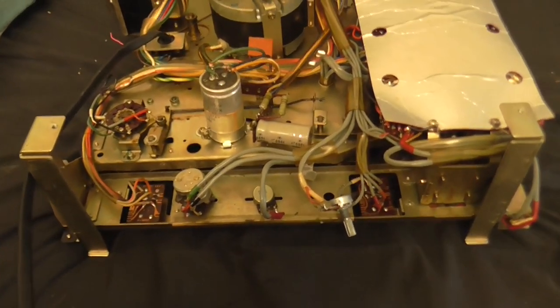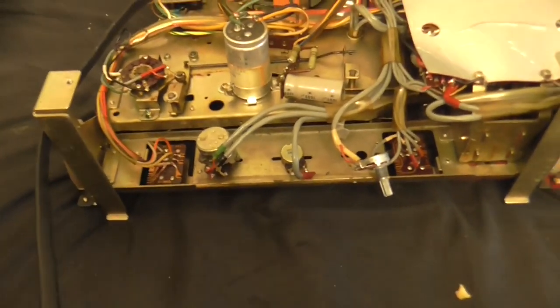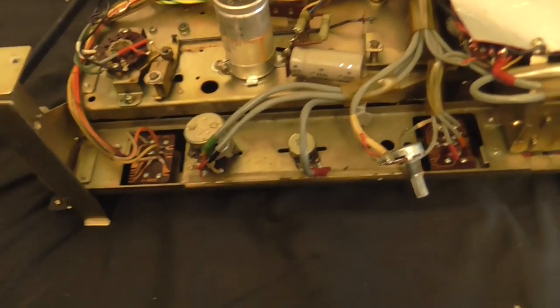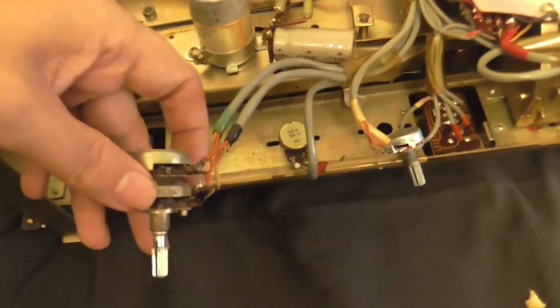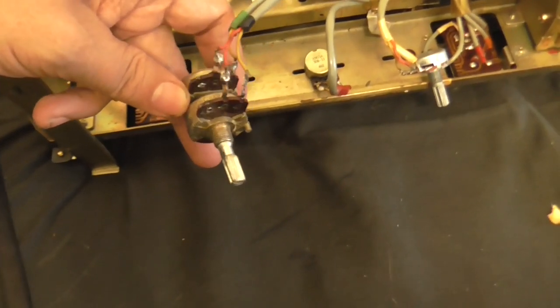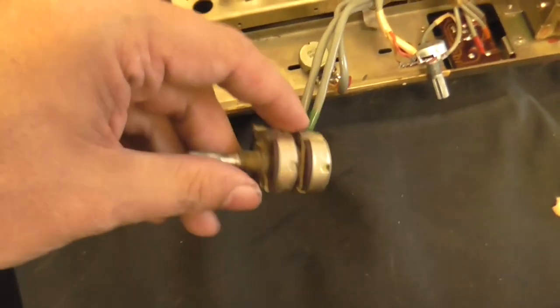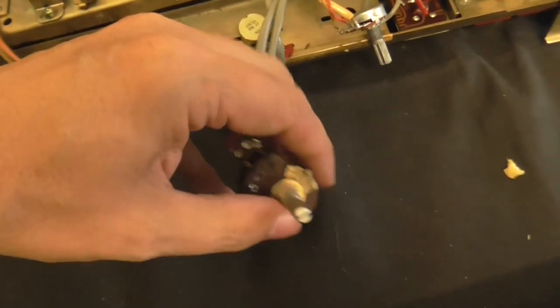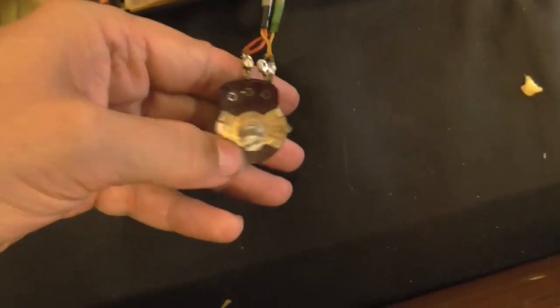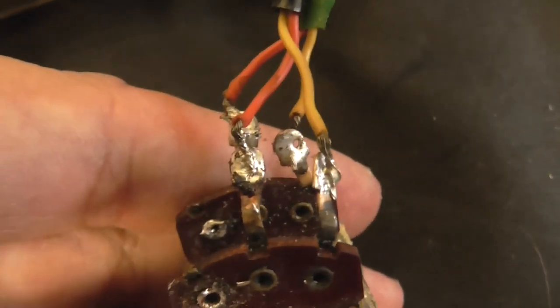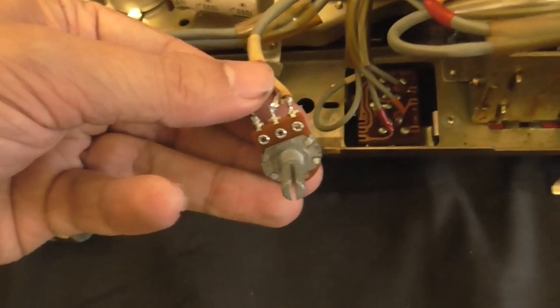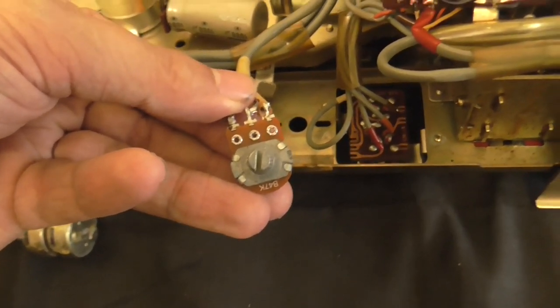Now, unfortunately, I don't have any other logarithmic potentiometers that will actually fit into there. So I think what I'm going to do is I'm going to take this tone control out. Because I never use this. I always have this turned up all the way. And this is a 20k ohm potentiometer, I believe this is a logarithmic one. So when this is turned up all the way, giving us about 20k ohms between these wires. So I'm just going to replace that with some 20k ohm resistors.